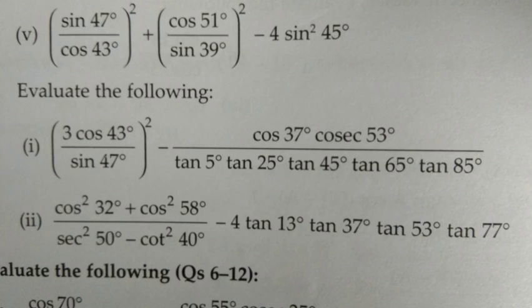For number 2, in the numerator, 32° and 58° are complementary, so you can use the cos² + sin² identity. In the denominator, sec² - cot² can be simplified.